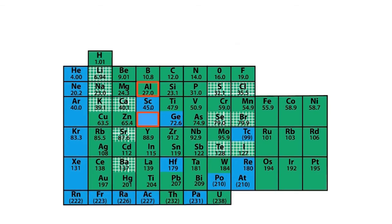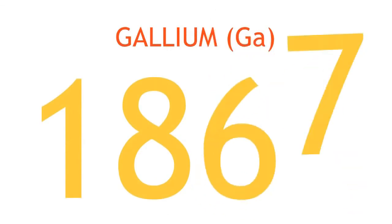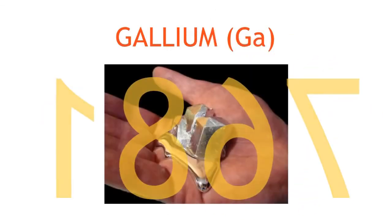One of the gaps in Mendeleev's table was found below aluminum. He predicted the properties of this mystery element and that it would have an atomic weight of around 68. Gallium was discovered, the mystery element.